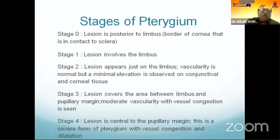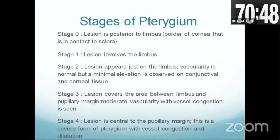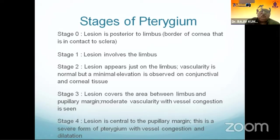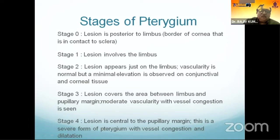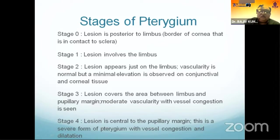Pterygium can be divided into stages. In stage 0, the lesion is posterior to the limbus; stage 1, the lesion involves the limbus; stage 2, the lesion appears just at the limbus with normal vascularity but minimal elevation. Stage 3 covers the area between the limbus and pupillary margin with moderate vascularity and vessel congestion. Stage 4, the most severe form, is central to the pupillary margin with vessel congestion and dilatation.